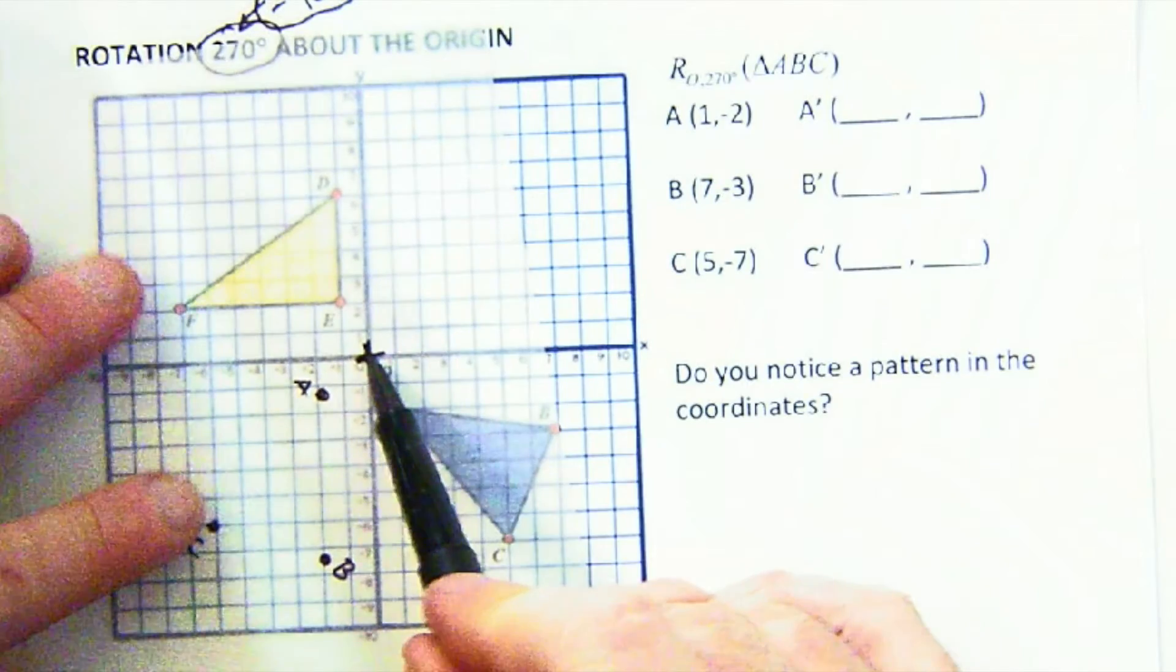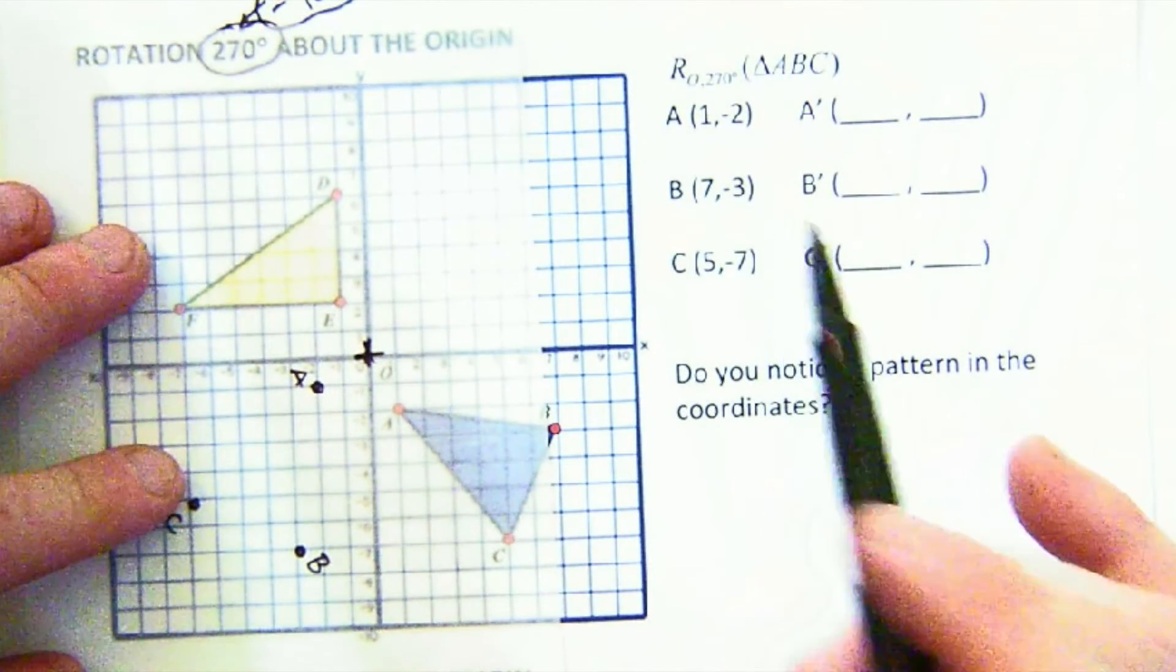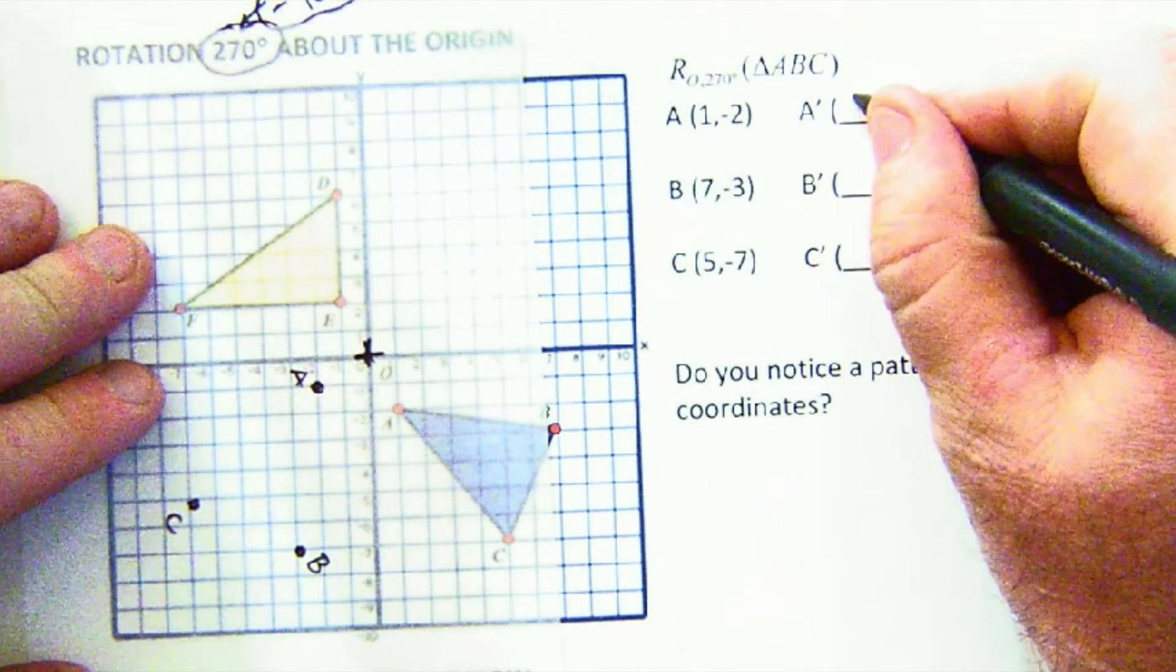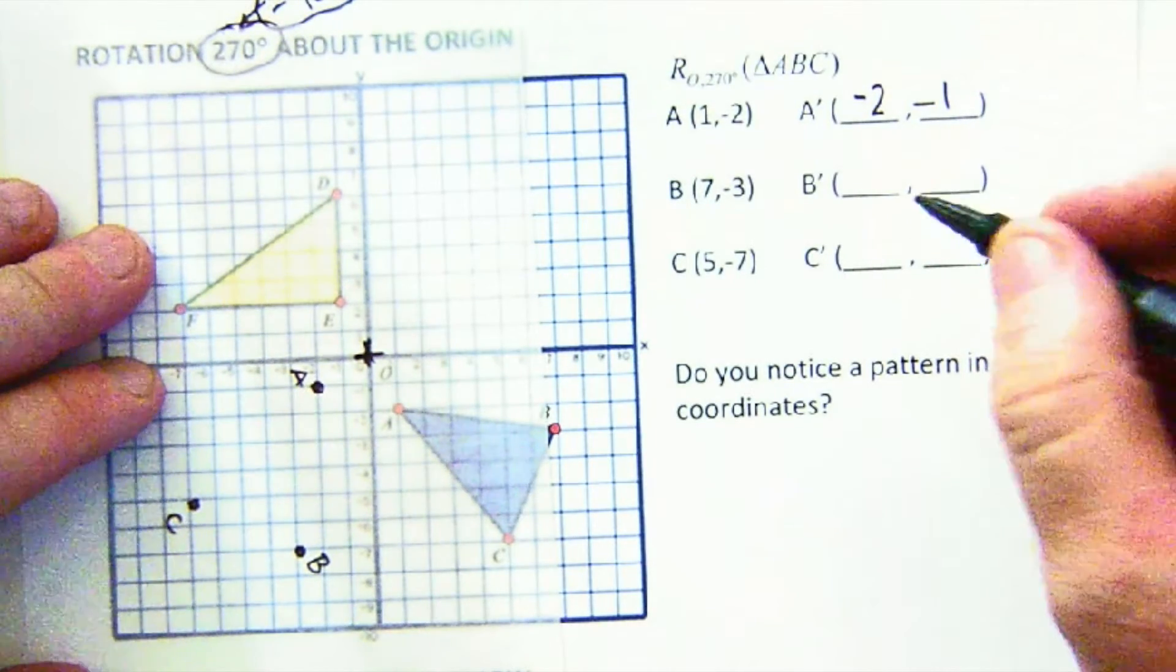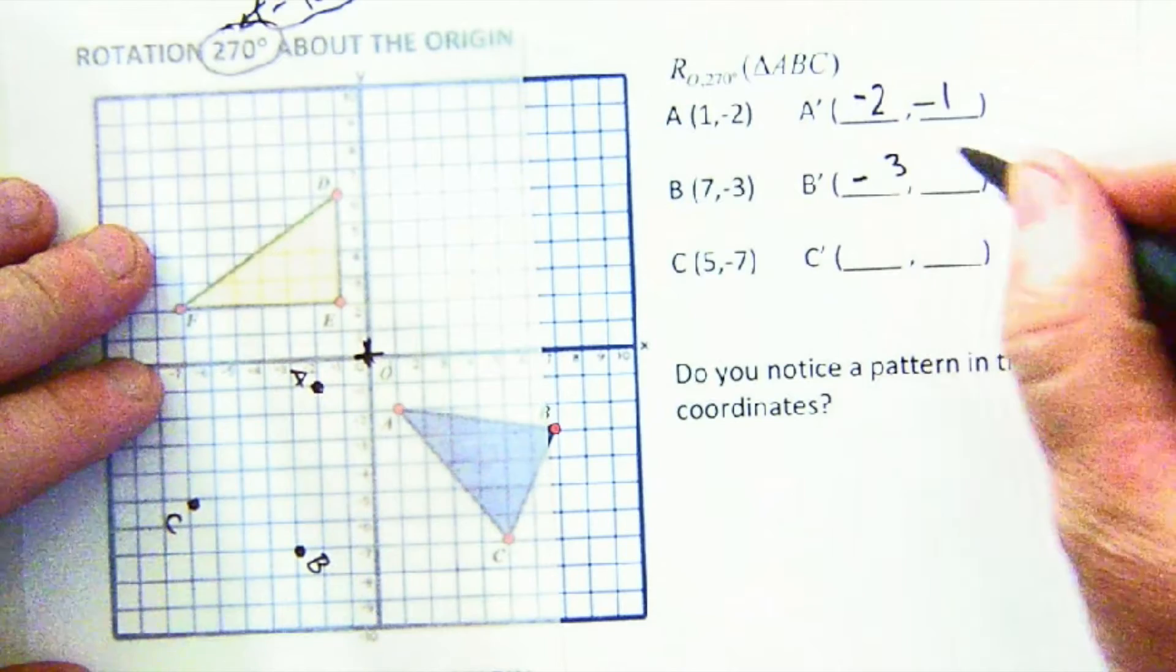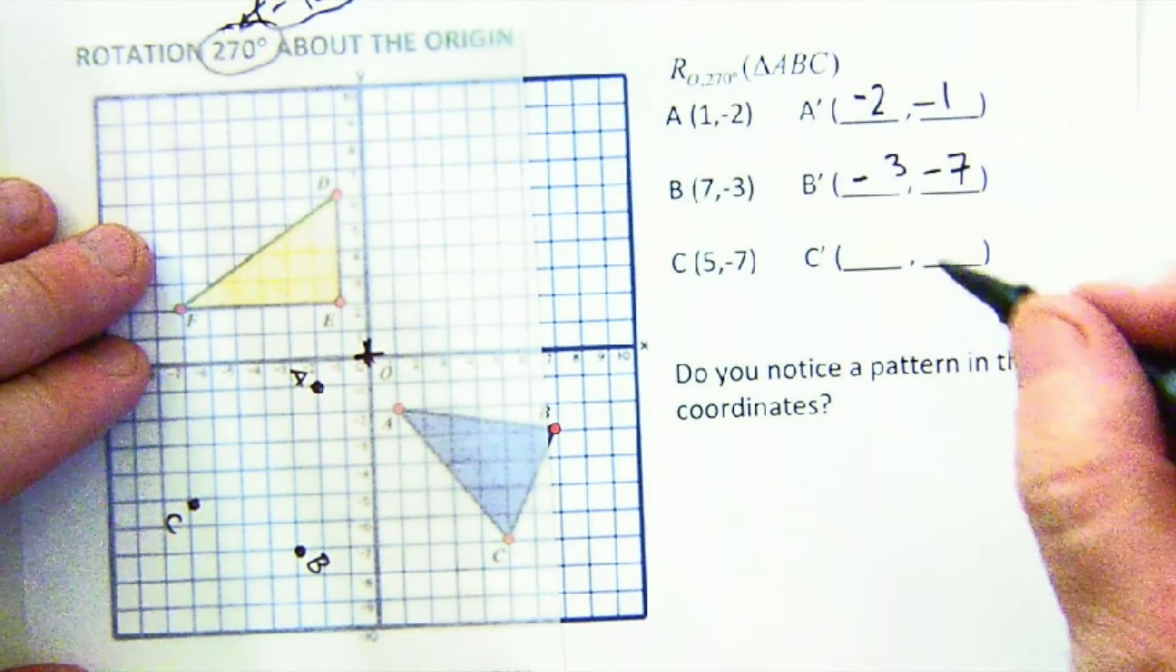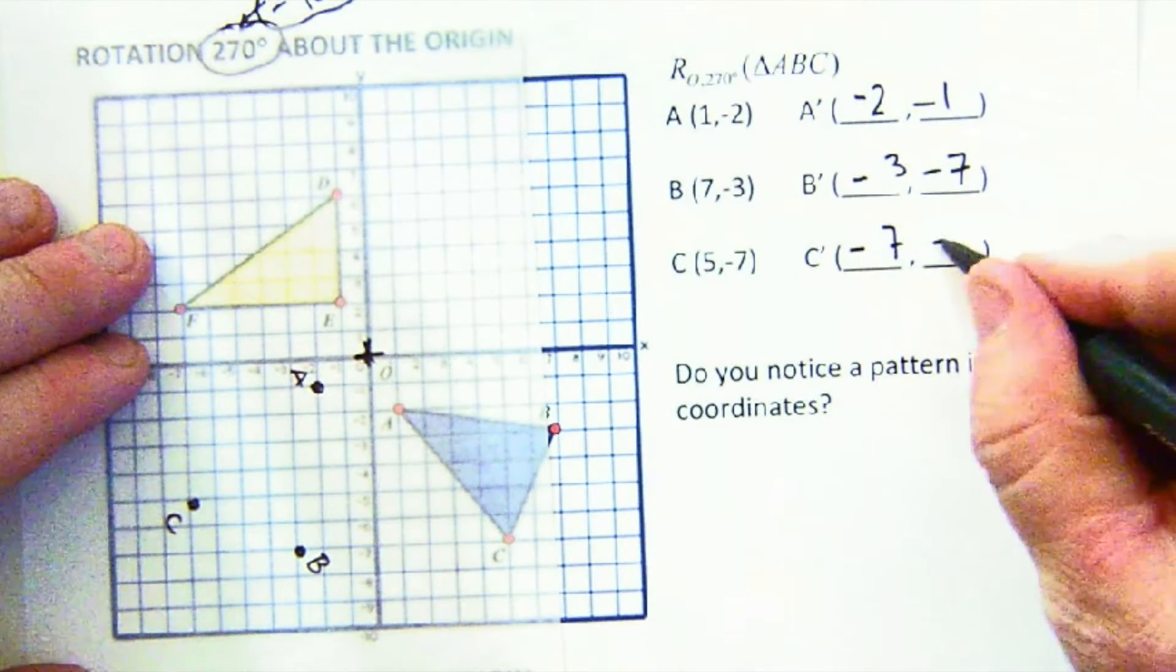Let me straighten my corner here. Let's get it right. So this would be at (-2, -1), B would be at (-3, -7), and C would be at (-7, -5).